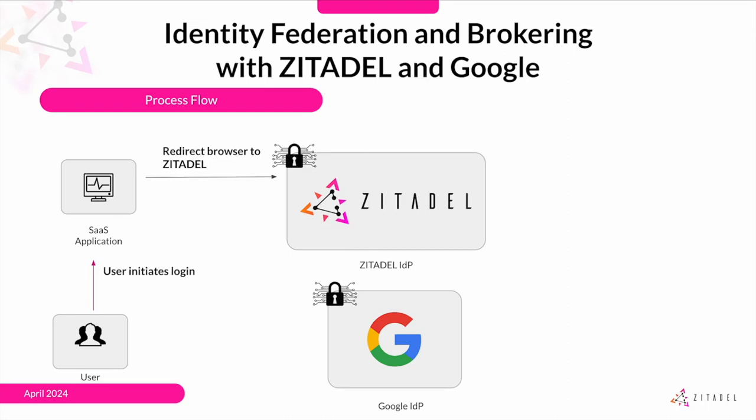Next, the SaaS app redirects the user to Citadel's authentication endpoint. The user chooses to log in with Google. In the next step, Citadel redirects the user to Google's OAuth 2 server. This URL includes the client ID assigned by Google to Citadel, the redirect URI where Google will send the response, and the scope which specifies what access Citadel is requesting.